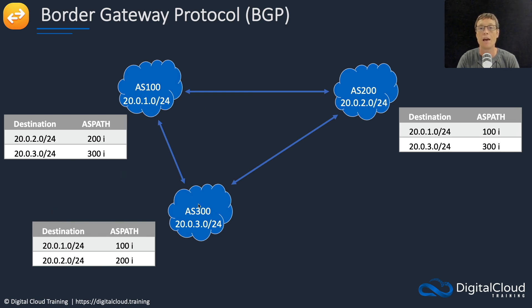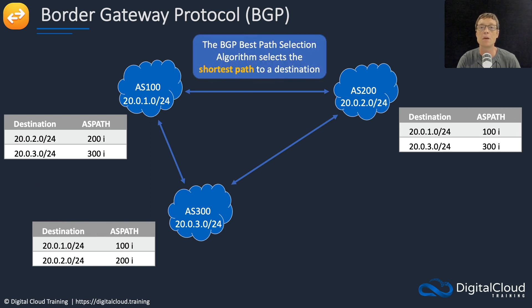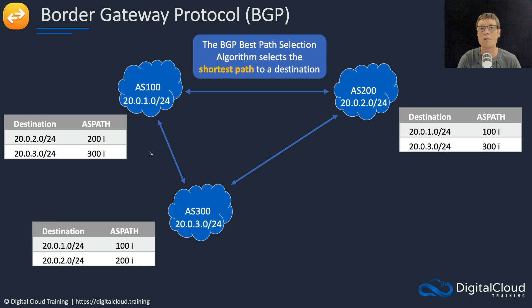The BGP best path selection algorithm selects the shortest path to a destination. So the shortest path to AS 300 would be directly to AS 300, and that's what BGP selects by default. However, the problem is that might not actually be the best path — it might look like the shortest path, but in reality that could be an extremely slow link or over a wide geographic area. The best path might actually be to go via AS 200. We'll look shortly at how we can influence routing decisions.